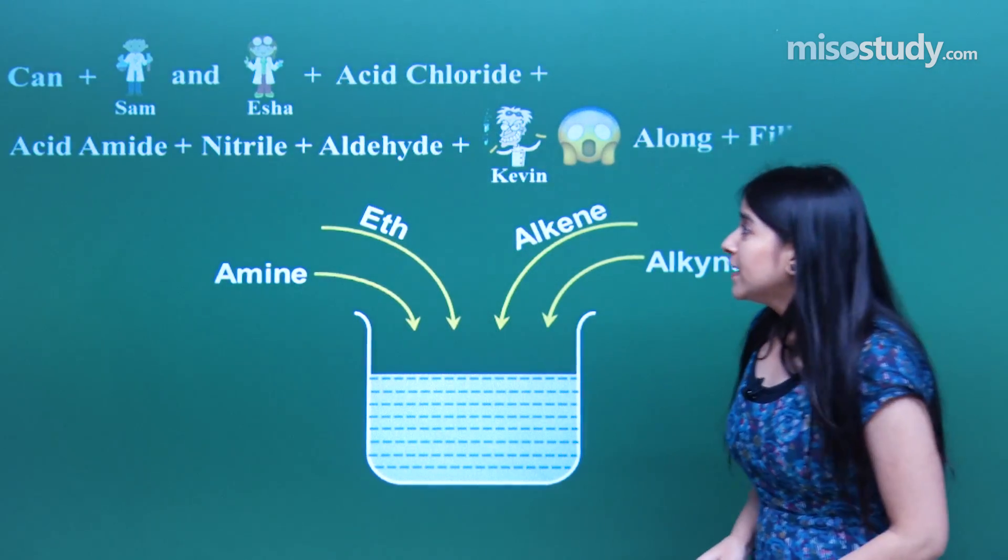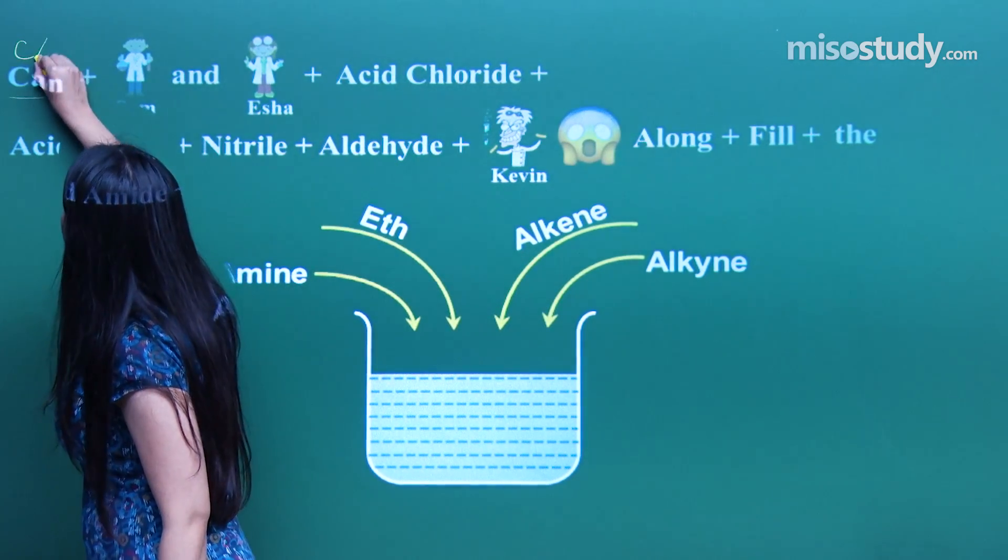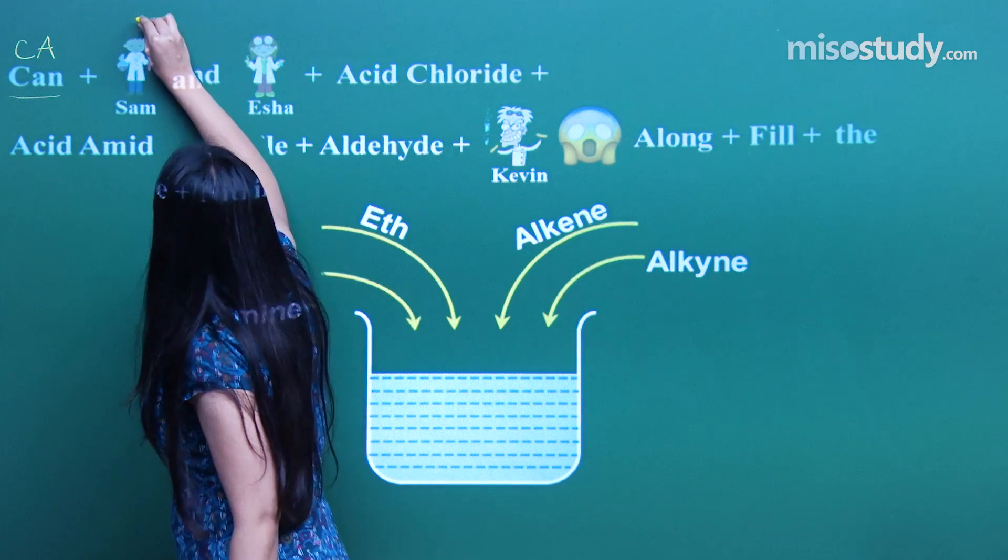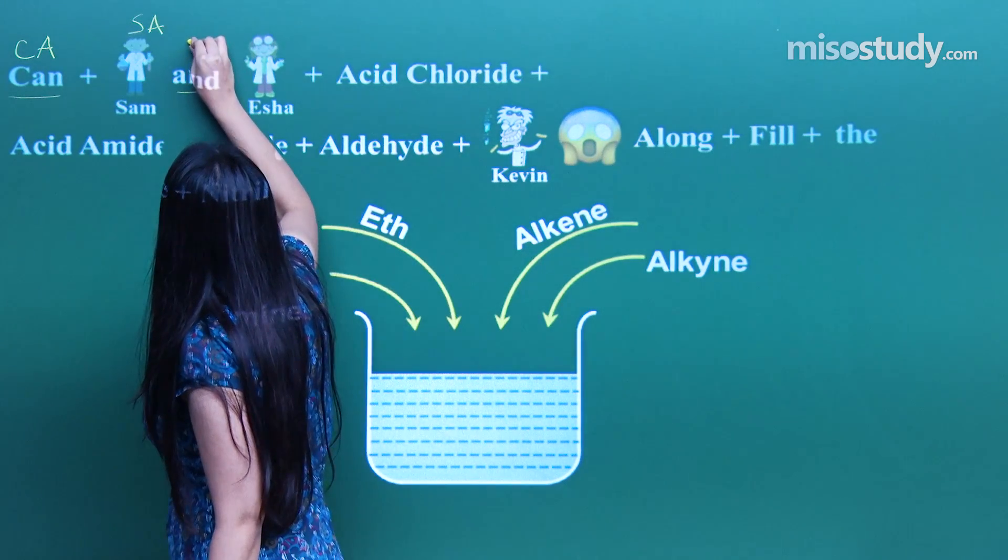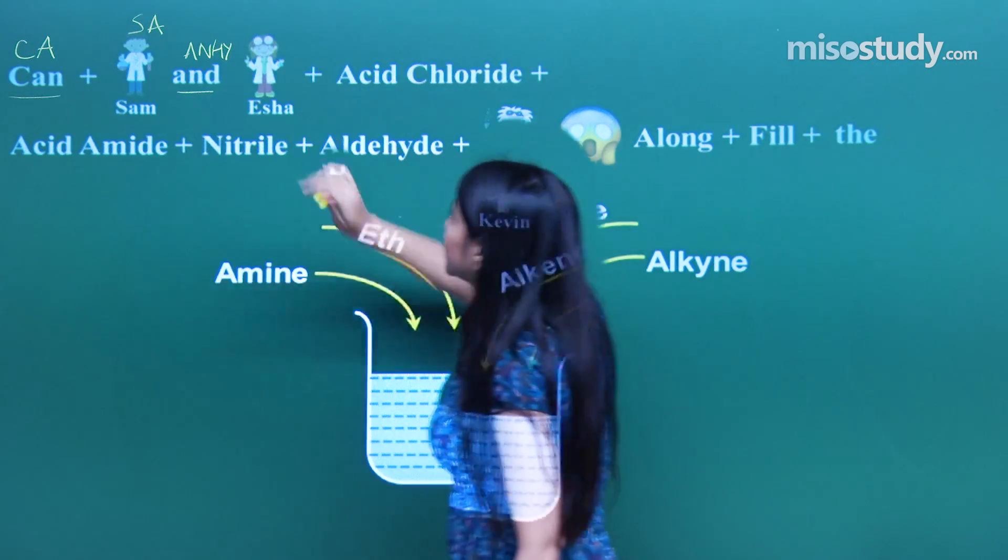Here, 'Can' stands for carboxylic acids, and 'Sam' stands for sulfonic acids. 'And' is for anhydride, and 'Isha' is nothing but our esters.